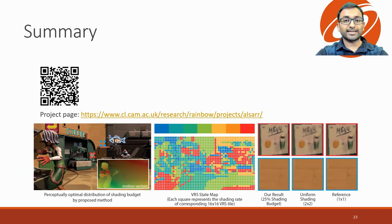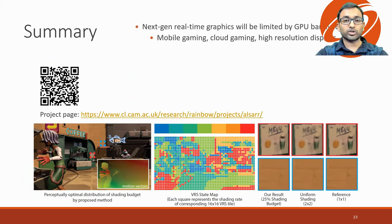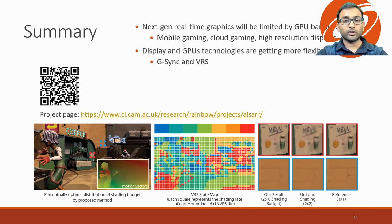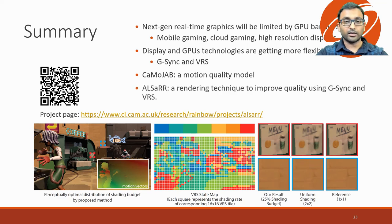To summarize the presentation: we started with the motivation that next-gen real-time graphics will be limited by GPU bandwidth. We saw how displays and GPUs are becoming more flexible. We developed a content-aware model of judder, aliasing, and blur. And finally, we discussed how this model can be used along with G-Sync and VRS to improve the rendering quality. The dataset and source code can be found on our project page.